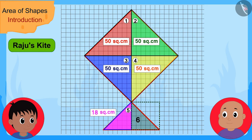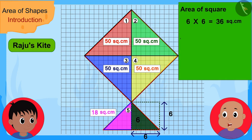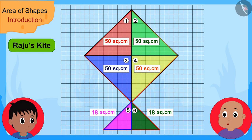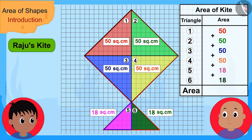Now, this second small triangle, just like the first small triangle, is half of this 36 square centimeters square. This means that the area of this second small triangle is also 18 square centimeters. Now finally, we just have to add the area of all these triangles and we will know the area of your kite. In this way, the area of your kite is 236 square centimeters. Bablu explained to Raju.